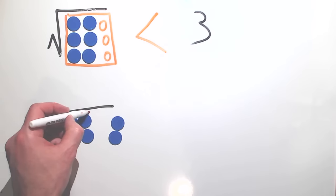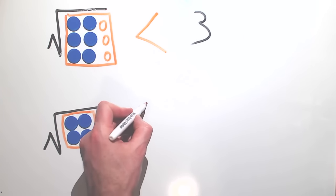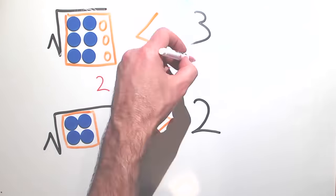We can also see that the largest complete square that we can make uses four counters with a few left over. So the square root of six is also greater than the square root of four, so it's greater than two. Therefore we know that the square root of six lies somewhere between two and three.